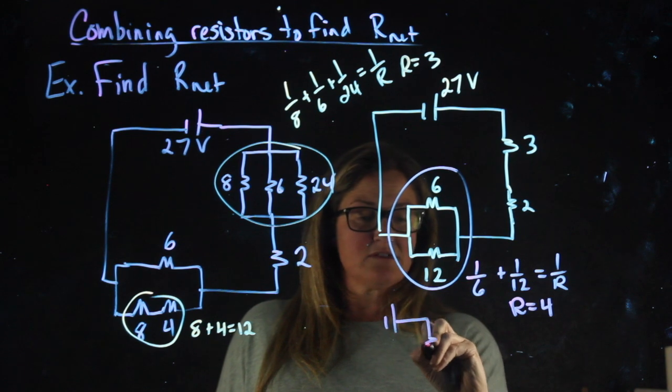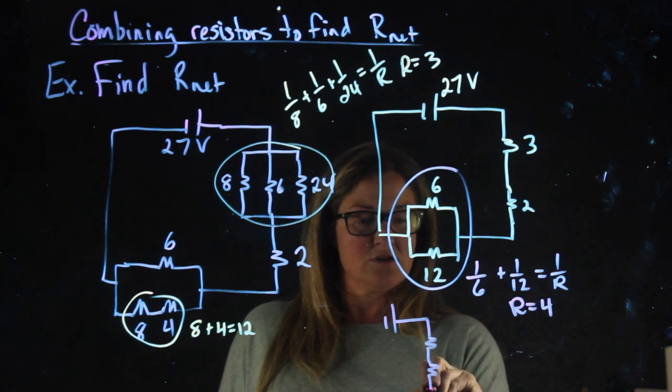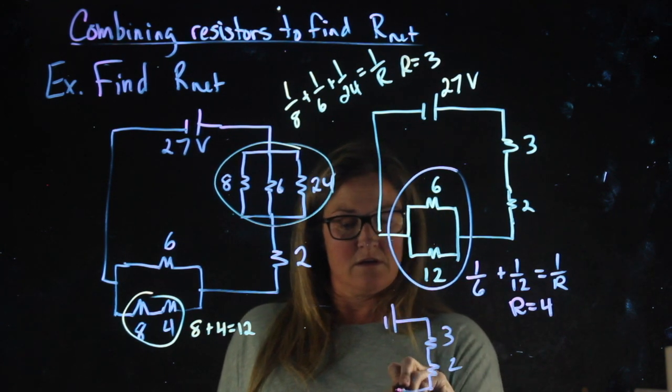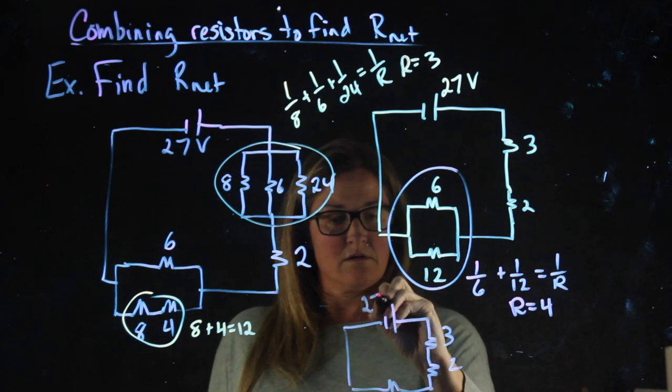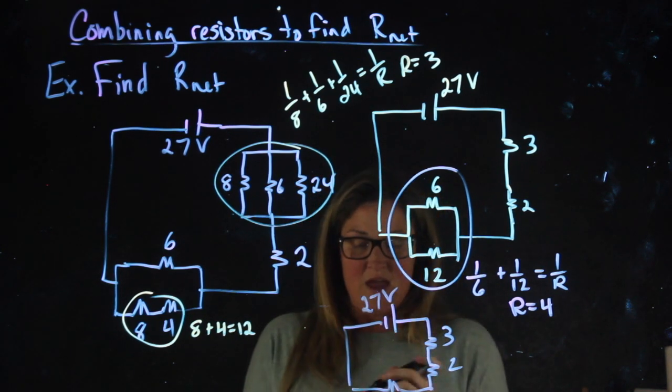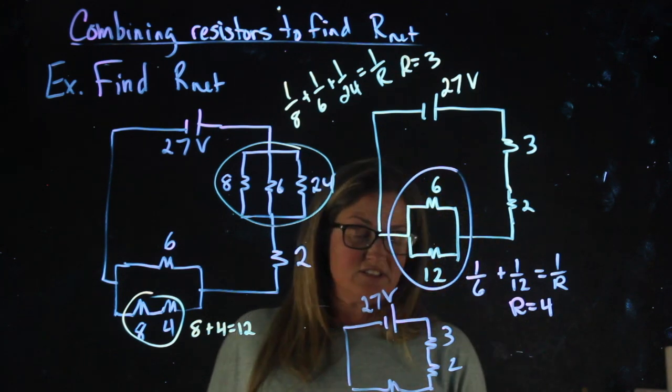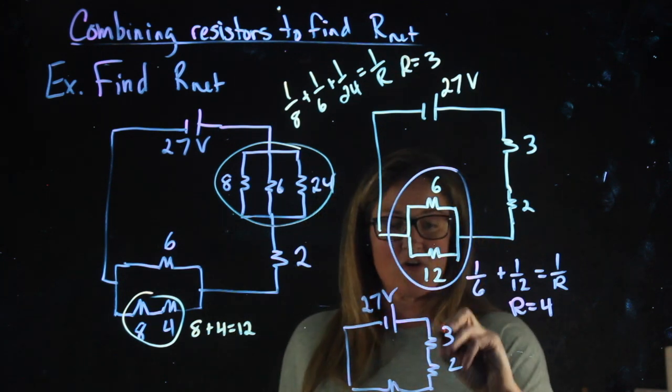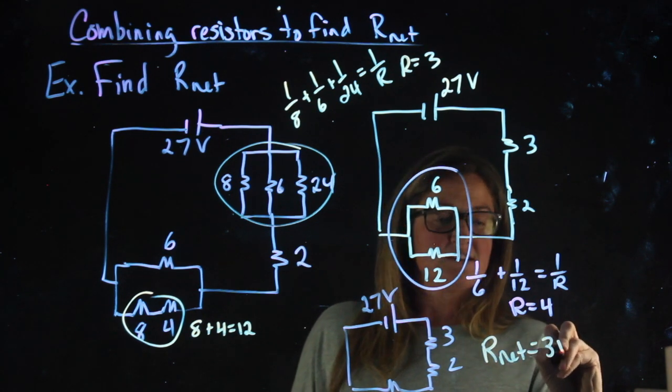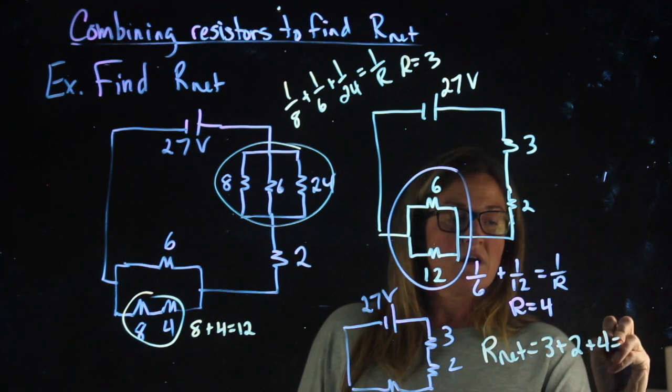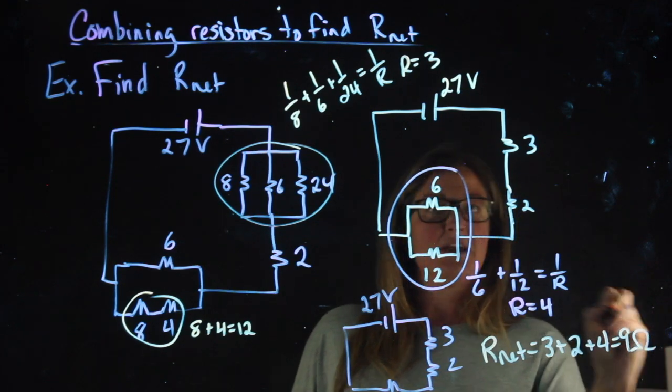27 volts, 3, 2, 4, comes back around. Now I'm down to just these resistors. They're all in series with each other. So Rnet for the whole circuit is 3 plus 2 plus 4, or a whopping 9 ohms.